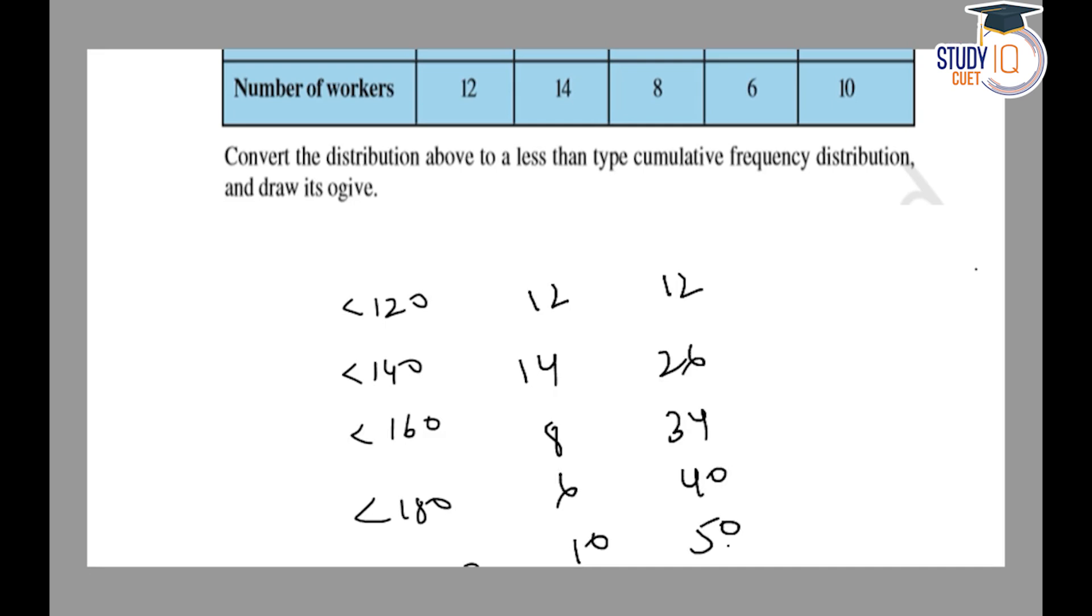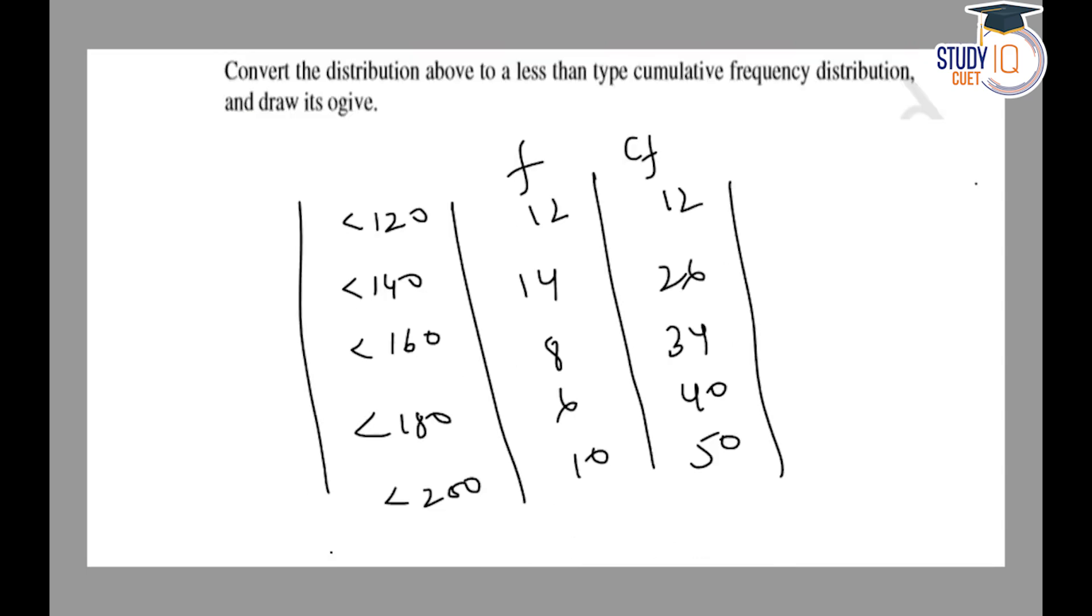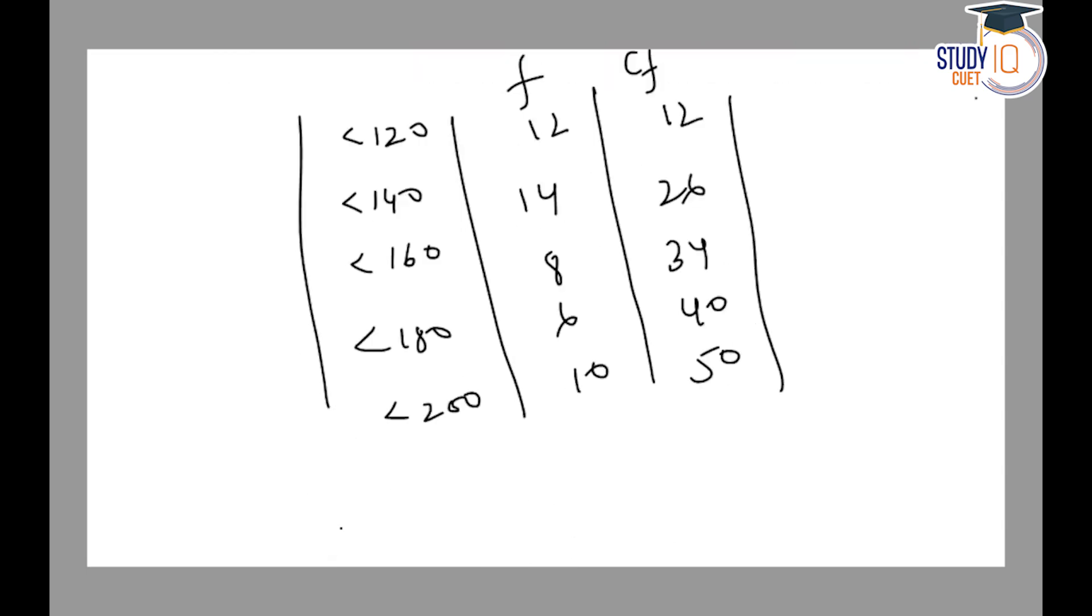And 50. This is the frequency and cumulative frequency. The table is now complete. Now we will draw the graph.